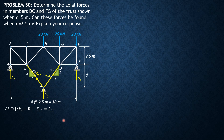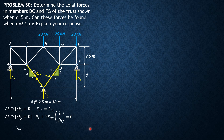Summation of forces in y equals zero at C. We have R_C plus two times S_DC times (2 over square root of 5) times 2 — since S_BC also equals S_DC. From this, we can express S_DC in terms of R_C: S_DC equals negative square root of 5 over 4 times R_C.